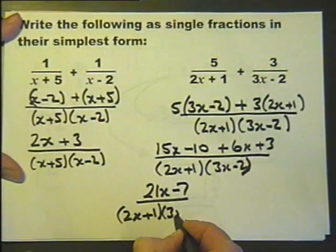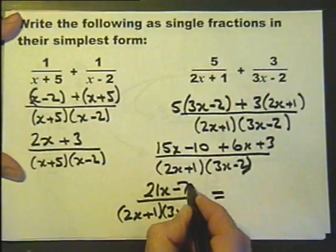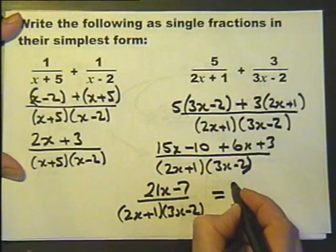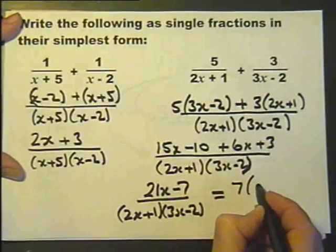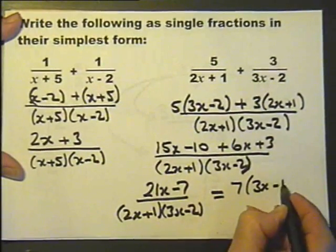Then the top actually factorises, which may be useful. Let's have a look. The top factorises by taking a 7 out, leaving us with 3x there and minus 1 there.